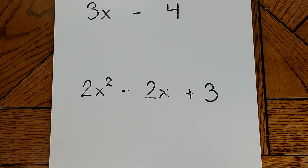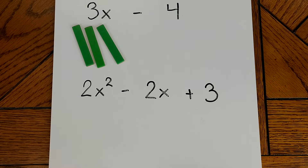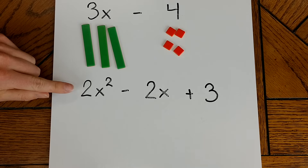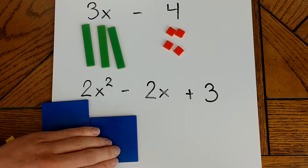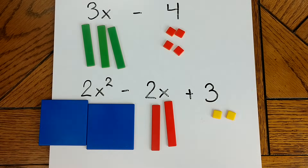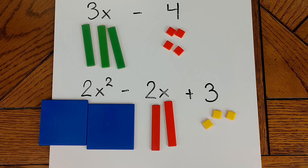By combining different tile types, we can model any basic algebraic expression, like 3x minus 4 or like 2x squared minus 2x plus 3. This can be used as a foundation for modeling a variety of other algebraic concepts, such as combining like terms, evaluating and solving equations, multiplying binomials, and more. Let's check out some examples.